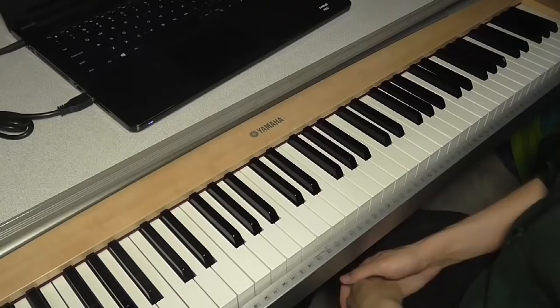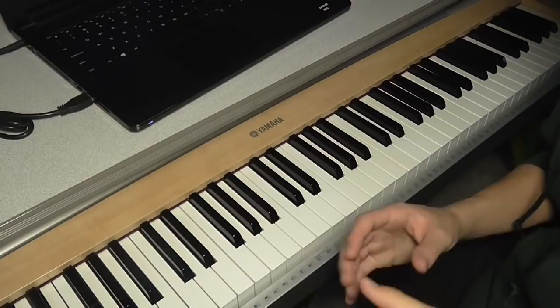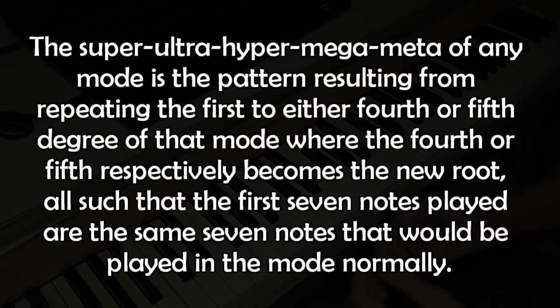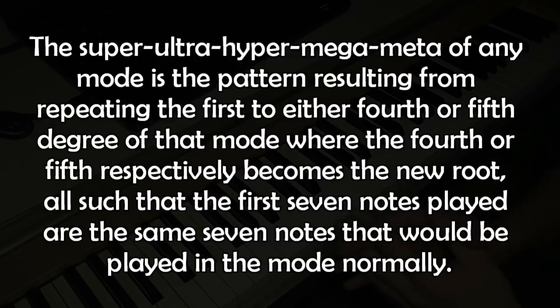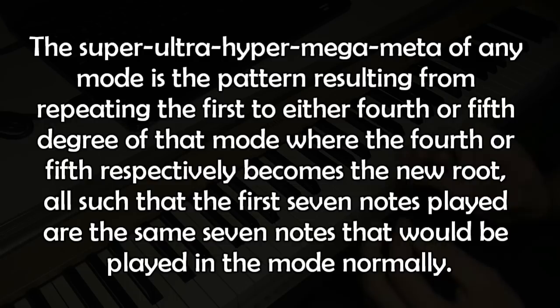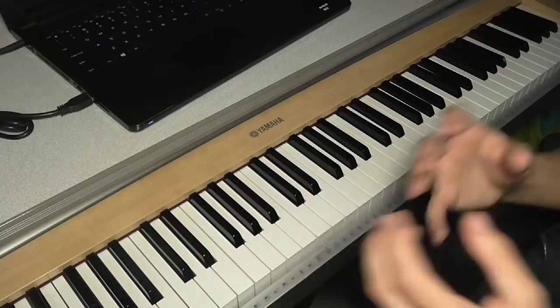My first idea for a rigorous definition was based only on the super ultra hyper mega meta Lydian: play the first four notes of the mode, go up a fifth, and that fifth becomes the new root where you repeat the process. But that didn't work once the second example came in, since that example uses the first three notes and wraps around fourths instead. So the actual rigorous definition is: the super ultra hyper mega meta of any mode is the pattern resulting from repeating up to either the fourth or fifth degree of that mode, where that degree becomes the new root, such that the first seven notes played match the seven notes of the mode normally.